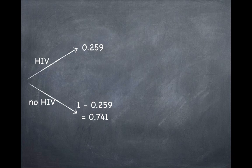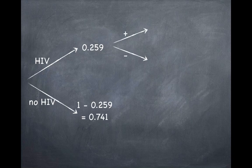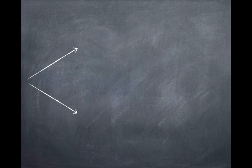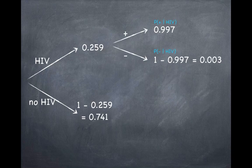Now let's focus on the top branch of the tree. If a person is a carrier, one of two things can happen when they take the ELISA test: they might test positive or they might test negative. The probability of testing positive is simply the accuracy rate of the test, 0.997. And the probability of a false negative — testing negative if they are a carrier — is the complement of that probability, 0.003.